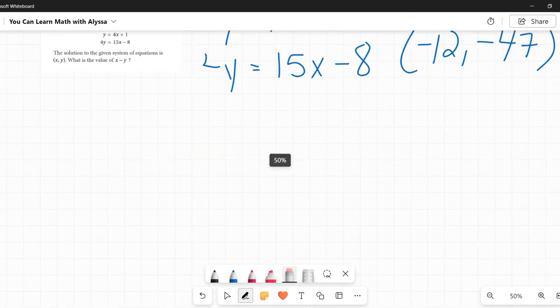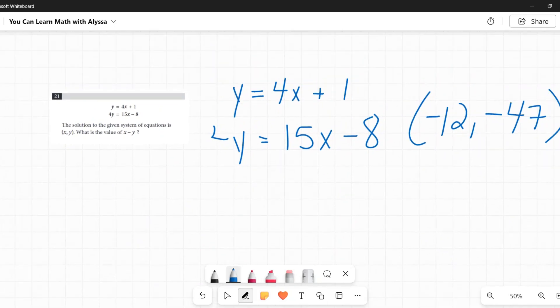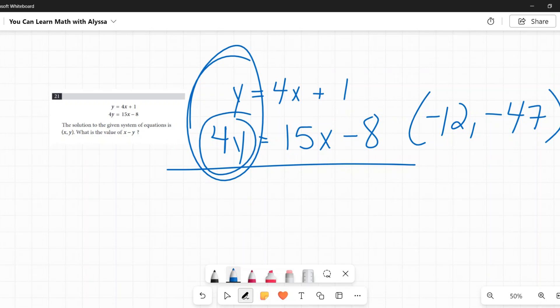Elimination is where you want to make something cancel out. In this case, I think the easiest, we're going to add these equations together. I think the easiest is to make the y's cancel out, because this is a positive 4y. I want this to be a negative 4y. So I'm going to multiply all of these by negative 4, and then those y's will cancel out.